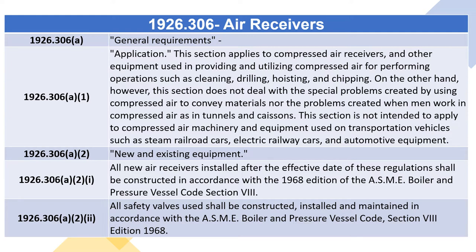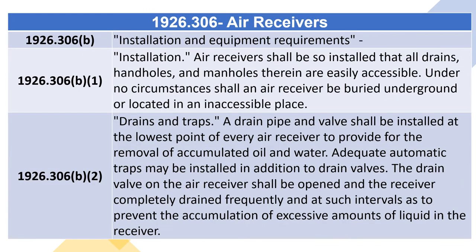1926.306(a)(2) New and Existing Equipment. 1926.306(a)(2)(i): All new air receivers installed after the effective date of these regulations shall be constructed in accordance with the ASME Boiler and Pressure Vessel Code, Section 8. 1926.306(a)(2)(ii): All safety valves used shall be constructed, installed, and maintained in accordance with the ASME Boiler and Pressure Vessel Code, Section 8, edition 1968. 1926.306(b) Installation and Equipment Requirements. 1926.306(b)(1) Installation.